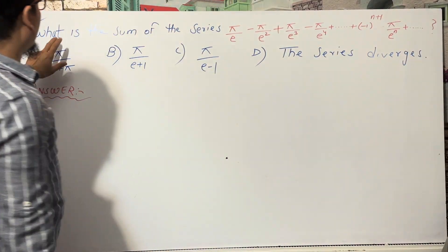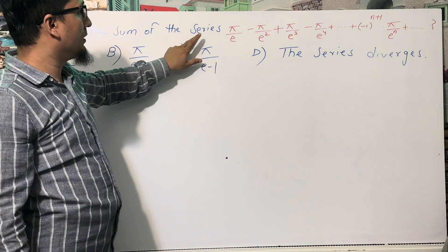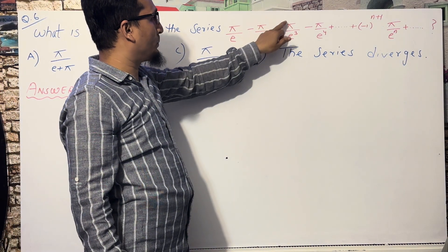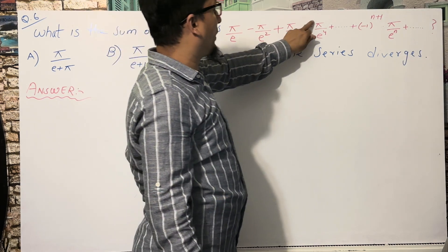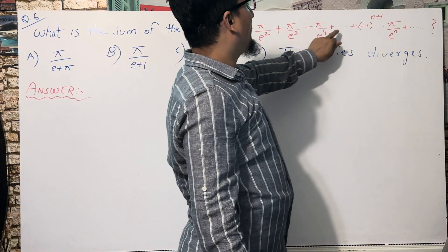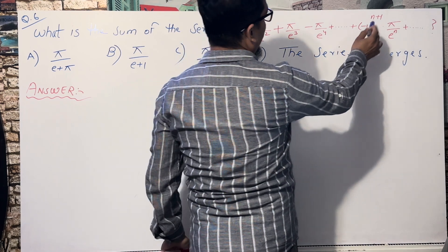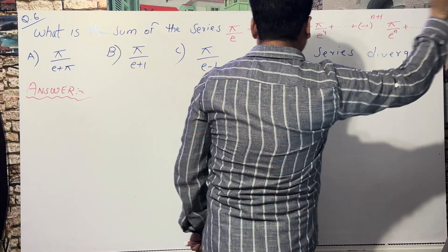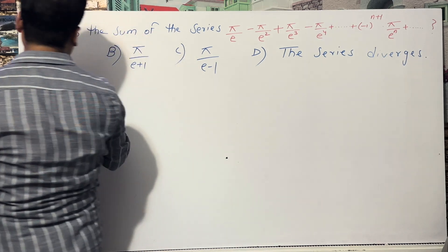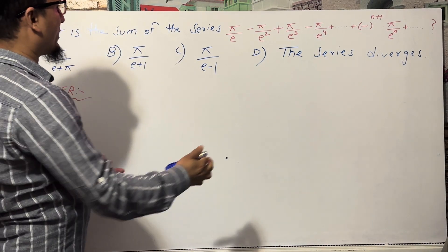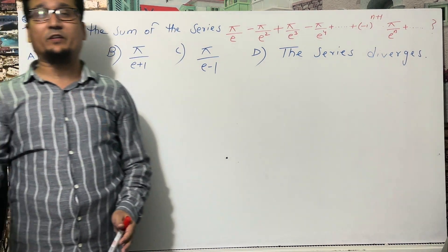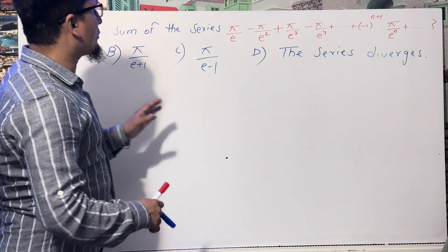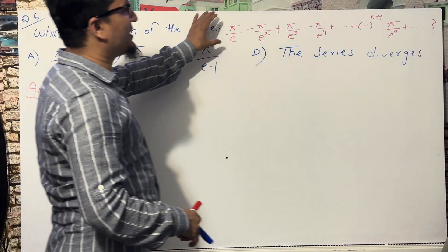The question is: what is the sum of the series π/e − π/e² + π/e³ − π/e⁴ + ... + (−1)^n · (π/eⁿ) + ... to infinity? There are four options A, B, C, and D. I don't know which one is correct yet — I will solve it first and then find the answer.